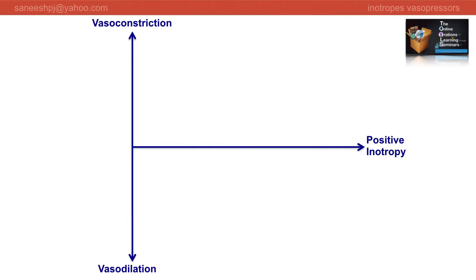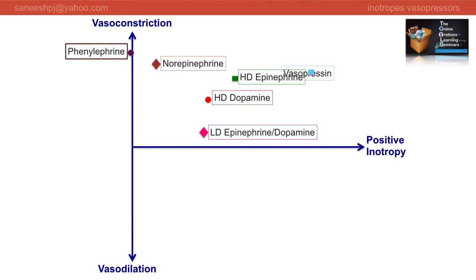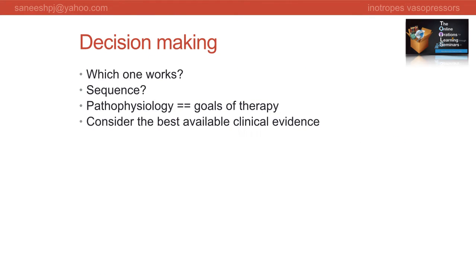In Part 1, we plotted the commonly used vasoactive drugs according to their effects. This helps in our decision making regarding our first choice drug. We may also decide to add another agent to achieve the target and to reduce possible side effects, targeting catecholamine sparing. The pathophysiology dictates the goals of therapy and we always rely on the best available clinical evidence.